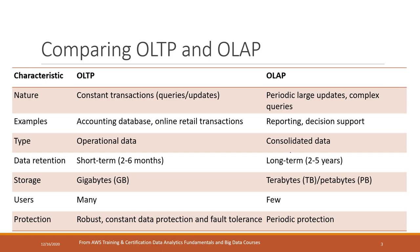Let's compare the two systems side by side: OLTP and OLAP. OLTP requires constant transactions — a lot of queries, updates, inserts, etc. — but those queries are normally not complicated. Examples include accounting databases and retailer transactions. These contain operational data, and normally we keep the data for a short time period like two to three months.